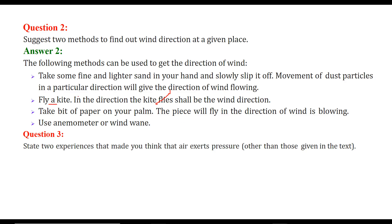You can take a piece of paper on your palm — the piece will fly in a certain direction because it is very light, so the wind is able to blow it. That direction is the actual direction of the wind. You can also use a wind vane and anemometer.